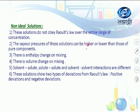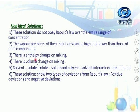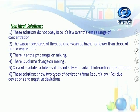The vapor pressures of non-ideal solutions can be higher or lower than those of the pure components. There is an enthalpy change on mixing, and there is also a volume change on mixing. Solvent-solute, solute-solute, and solvent-solvent interactions are different. These solutions show two types of deviations from Raoult's law: positive deviations and negative deviations.